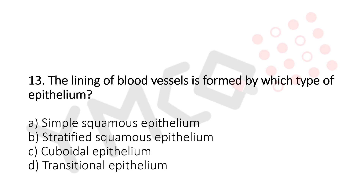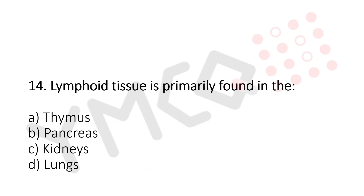Question 13: The lining of blood vessels is formed by which type of epithelium? Option A: simple squamous epithelium. Option B: stratified squamous epithelium. Option C: cuboidal epithelium. Option D: transitional epithelium. The answer is Option A, simple squamous epithelium. Question 14: Lymphoid tissue is primarily found in — Option A: thymus. Option B: pancreas. Option C: kidney. Option D: lung.